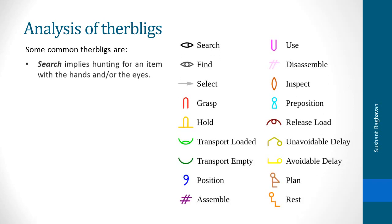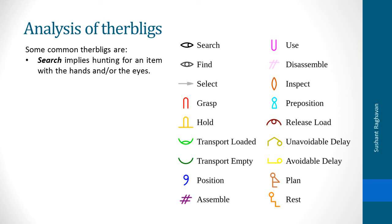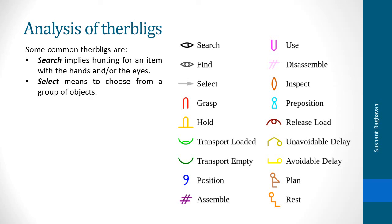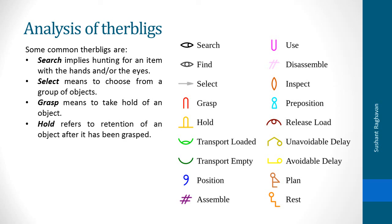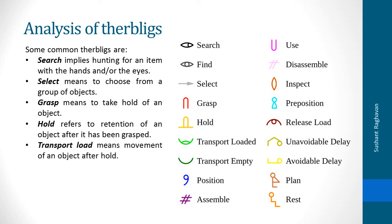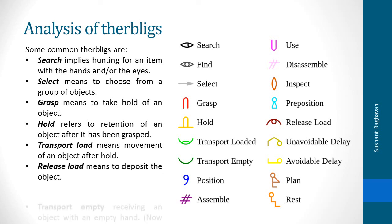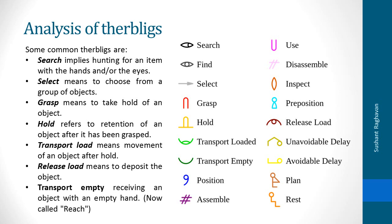Some common Therbligs are: Search — hunting for an item with the hands and/or eyes. Select — to choose from a group of objects. Grasp — to take hold of an object. Hold — retention of an object after it has been grasped. Transport load — movement of an object after hold. Release load — to deposit the object. Transport empty — receiving an object with an empty hand, now called reach. Some other therbligs are inspect, position, plan, rest and delay.